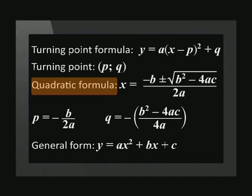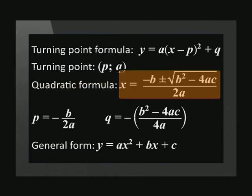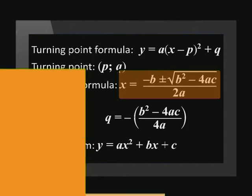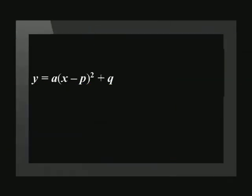You will get this formula on a formula sheet, but it helps to know it off by heart. This formula gives us the roots of any quadratic function. It also contains a way to calculate the coordinates of the turning point. You may have noticed that in the clip we just saw, the formula used was y equals a, open brackets, x minus p, close brackets, all squared, plus q.